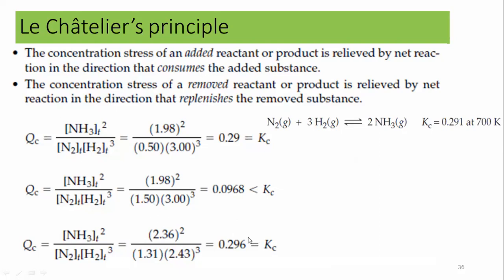The equilibrium constant will remain the same, but you can maximize the product. The product was 1.98 initially, but with the addition of nitrogen, the product is now 2.36. You can increase the concentration of the product by altering the concentration of any reactant, and the system will readjust to the same equilibrium constant.